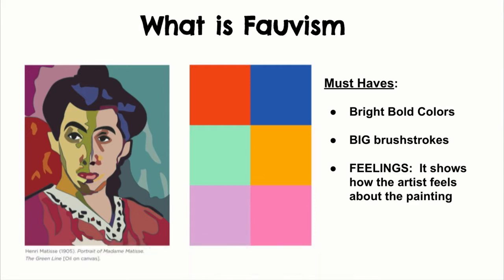So what is Fauvism? Fauvism comes from the term Les Fauves, also known as wild beasts. It was used in the early 1900s to describe a group of French painters who used bright, bold, and strong colors instead of using realistic ones. Looking at this face, you can see that instead of using pale beiges and browns to create skin color, Fauvism liked to use blues and greens.